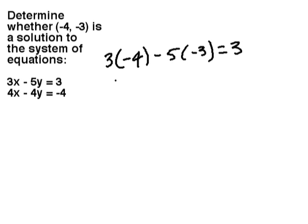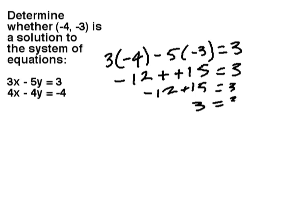So, 3 times negative 4 is negative 12. Minus 5 times a negative 3, that's a negative 15, equals 3. When I have two negative signs in a row like this, I can convert them to a positive. I've got negative 12 plus 15 equals 3. That's 3 equals 3. That one checks.